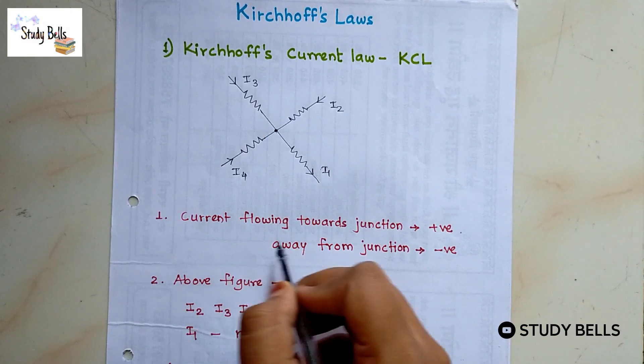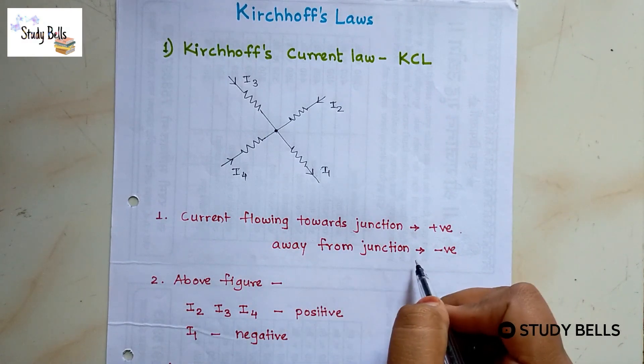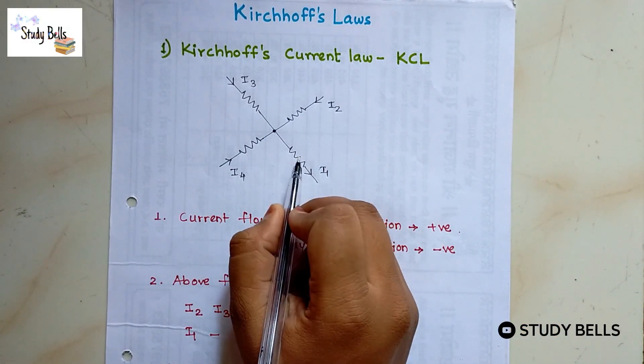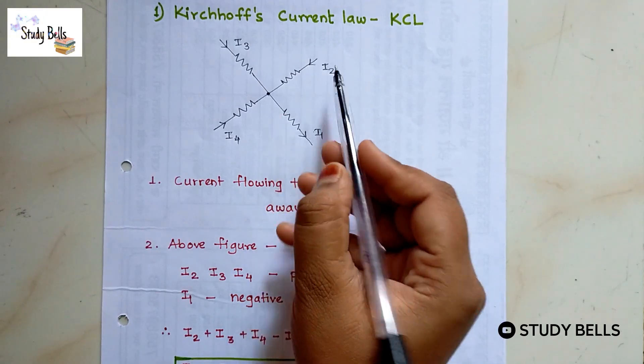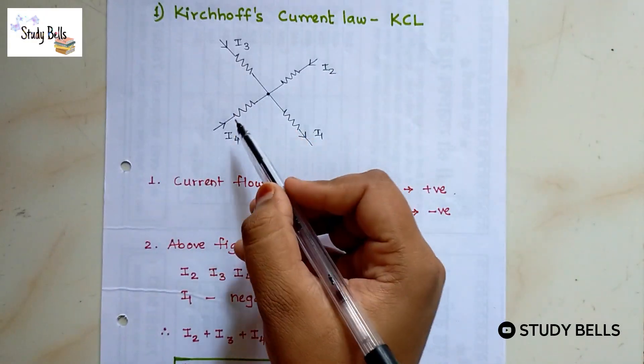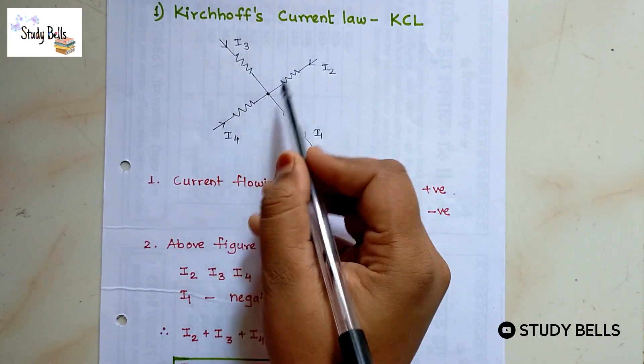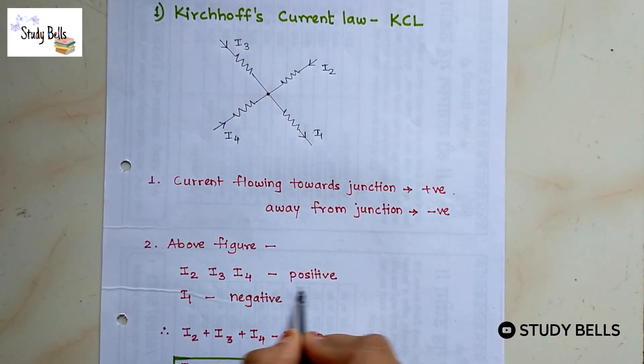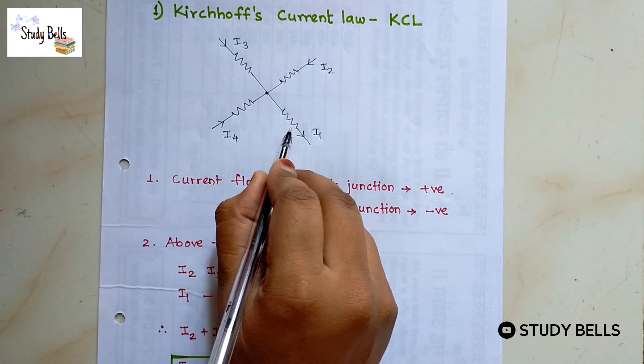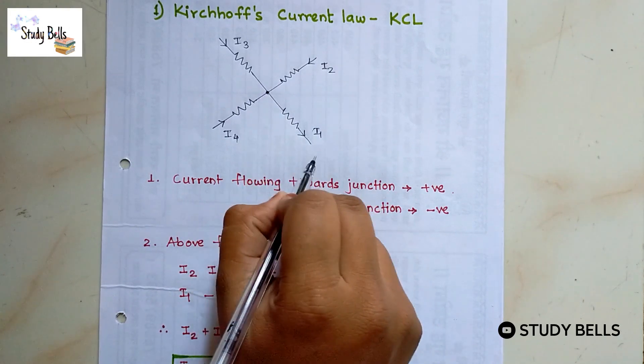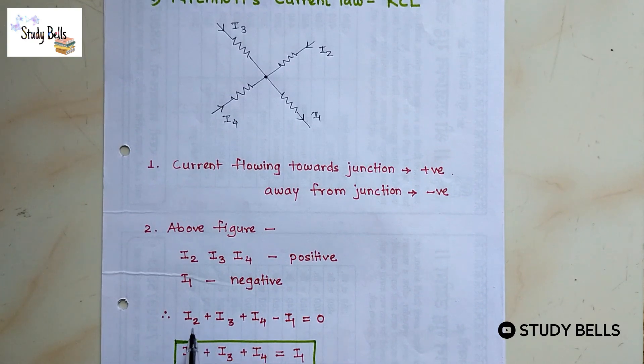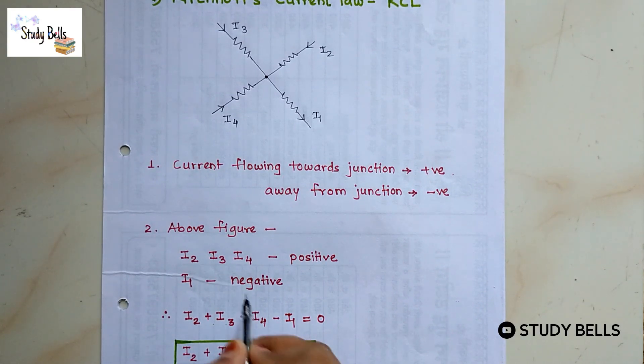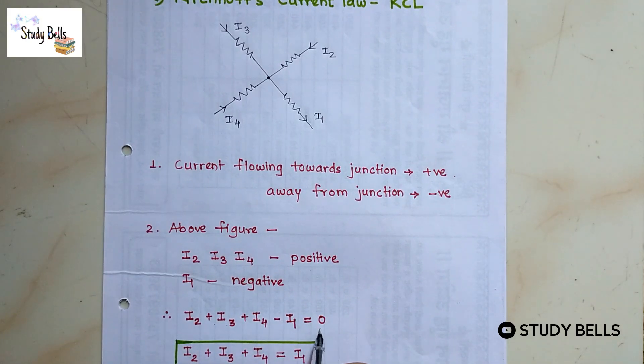But when current flowing away from the junction we will take it as negative. In this figure I2, I3, I4 are towards the junction. So they are positive. But I1 is away from the junction so it is negative. Now I2 plus I3 plus I4 and I1 is negative so minus I1 equals 0.